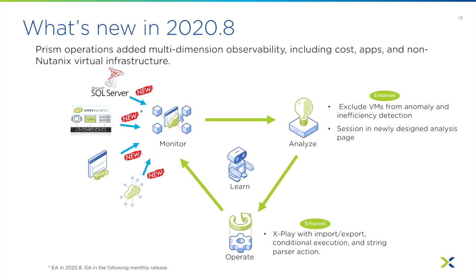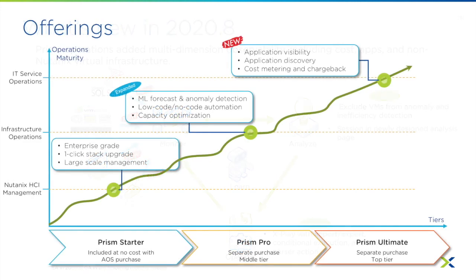With all these new features, you can access them across three tiers. The Starter tier is the Prism you've been using so far — always free with your AOS purchase — and it focuses on Nutanix HCI management.